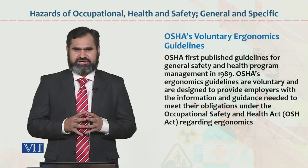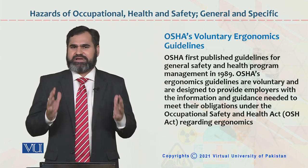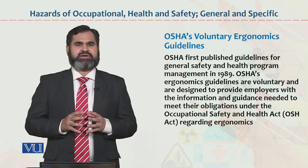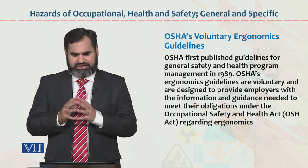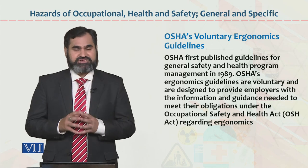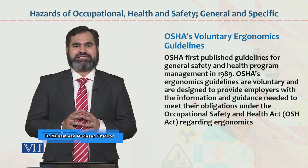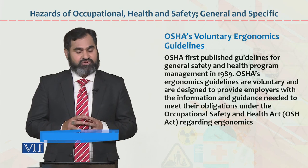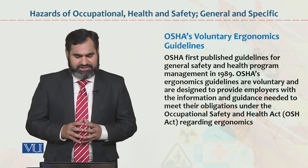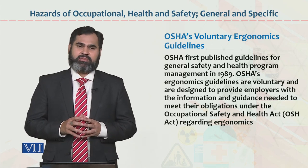Dear students, the topic which we are going to discuss is hazards of occupational safety and health. We have discussed two aspects — some hazards are general and some specific. For example, occupational safety and health administration's voluntary ergonomics guidelines. OSHA first published guidelines for general safety and health program management in 1989. These ergonomic guidelines are voluntary and designed to provide employees with the information and guidance needed to meet their obligation under the Occupational Safety Health Act regarding ergonomics.